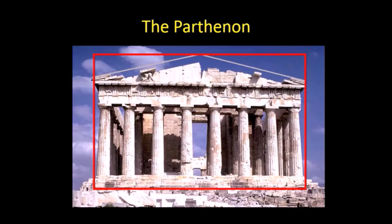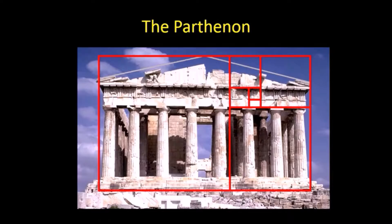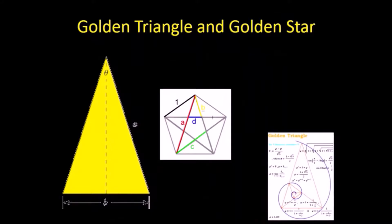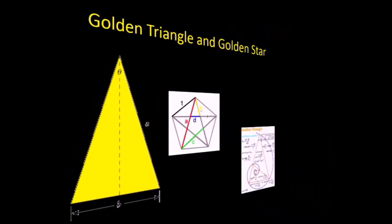The Parthenon uses the golden rectangle in its overall form as well as individual features. Other ideal proportions can be found in the golden triangle and the golden star.